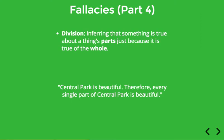So for instance: Central Park is beautiful, therefore every single part of Central Park is beautiful. Now Central Park is beautiful, but that doesn't mean that every single part of Central Park is also beautiful. There've got to be some parts that are dirty or ugly, and that might be true even though Central Park as a whole is a beautiful place. It's a fallacy because you're taking something that's true about a thing as a whole and assuming that it must be true of all of its parts — but that's just not the case.